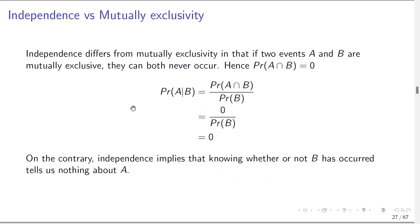Let me distinguish between independence and the mutually exclusive concept. Independence differs from mutual exclusivity in that if two events A and B are mutually exclusive, we are saying that both of them can never occur at the same time — so A∩B = ∅, meaning P(A|B) = 0. But independence implies that knowing whether or not B has occurred tells us nothing about the probability of A, so P(A|B) = P(A), not zero. This is an important distinction that can sometimes be confusing for students.